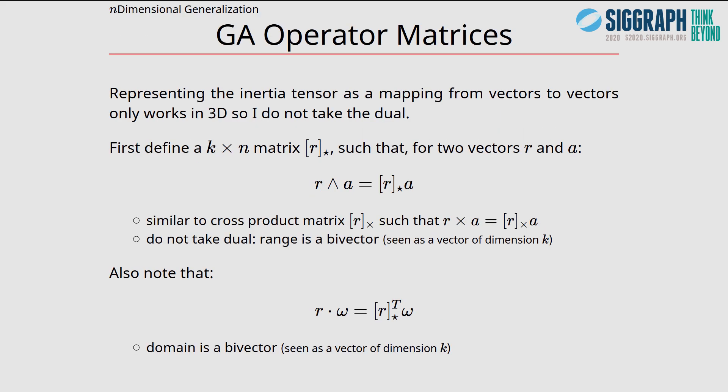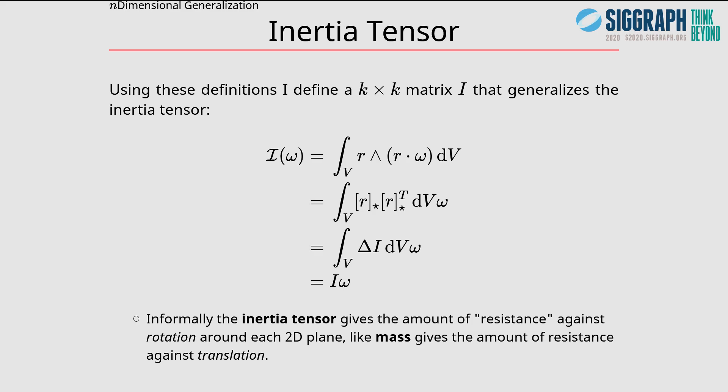Representing the inertia tensor as a mapping from vectors to vectors only works in 3D, so I do not take the dual. First I define a k by n matrix r star such that for two vectors r and a, the exterior product of r and a is just the matrix r star times a. That's very similar to the cross product matrix, but the difference is that the range is a bivector. So even though we're using matrix notation to multiply a vector with a matrix, the result is a bivector, but we're seeing it as a vector of dimension k. Also if we take the transpose of the matrix r star, it applies the dual operation which is the dot product between a vector and a bivector, but here the domain is now a bivector, seen as a vector of dimension k.